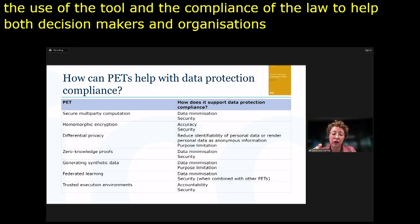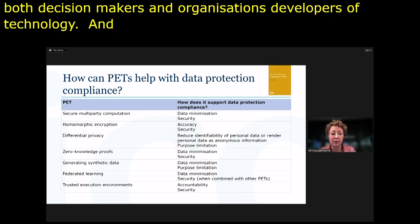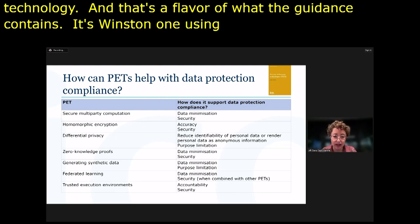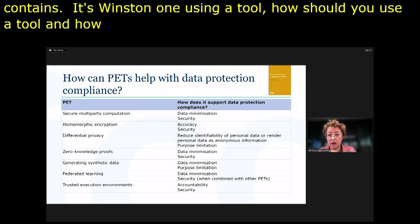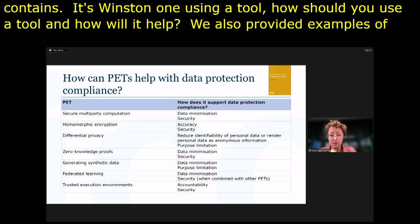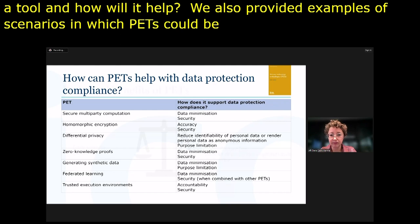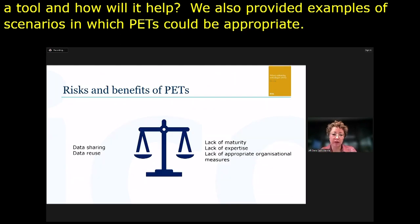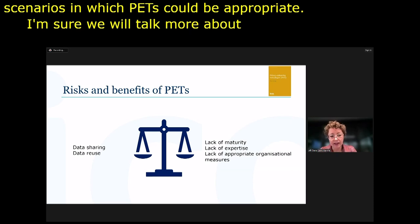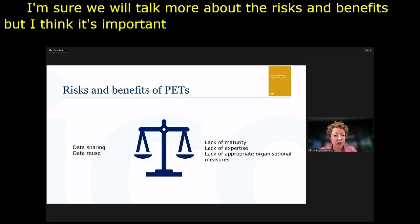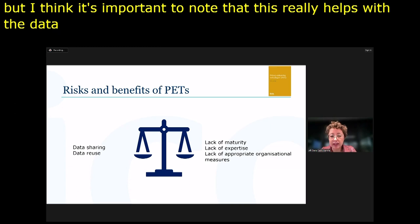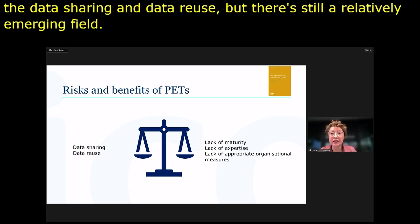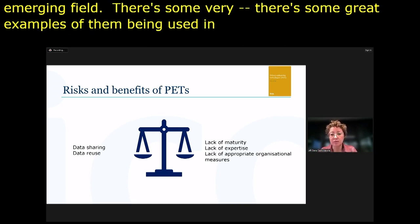The guidance provides a one-to-one mapping: you're using a tool — how should you use it, and how will it help? We've also provided examples of scenarios where PETs could be appropriate. Privacy-enhancing technologies really help with data sharing and data reuse, but they're still a relatively emerging field. There are great examples of them being used in practice, so they're not just an academic concept, but they're still relatively new with issues around maturity and expertise.